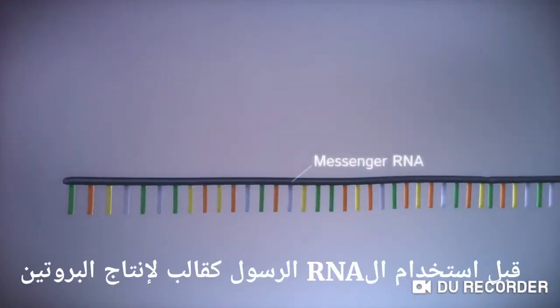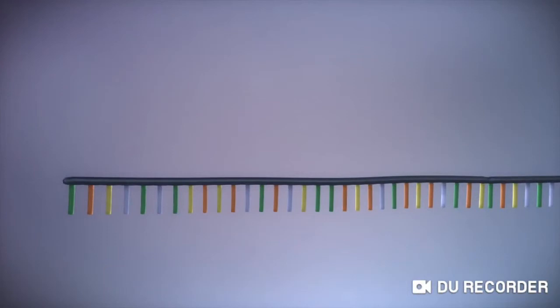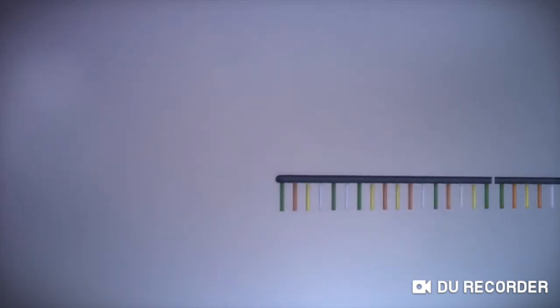Before the messenger RNA can be used as a template for the production of proteins, it needs to be processed. This involves removing and adding sections of RNA.